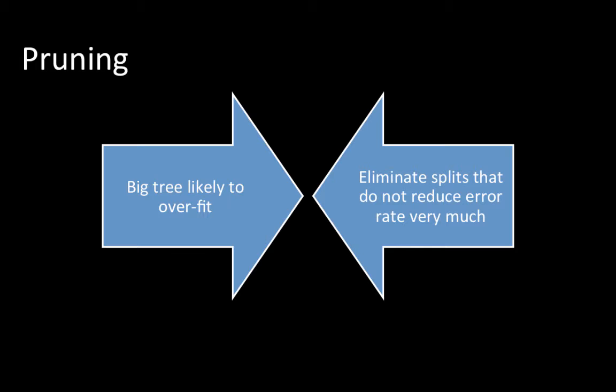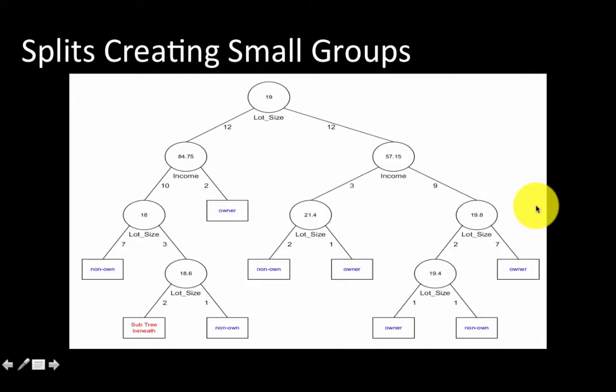What we try to do is we try to eliminate the splits that do not reduce the error rate very much. Sometimes what happens is you get splits that create very small groups. For example, here you've got a split on 19.8 of lot size—it creates two cases. That's a very small thing, so you might be able to combine them and not perform the split at all. Consider this itself as a leaf node and eliminate that split.